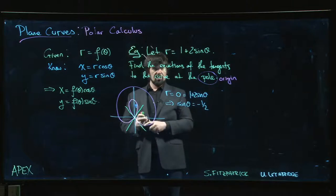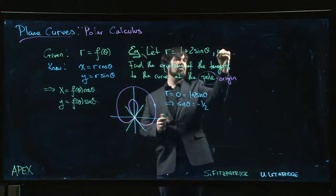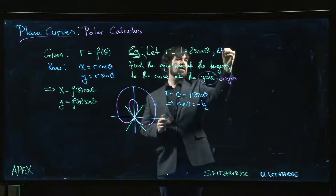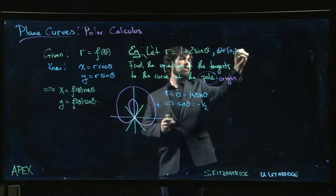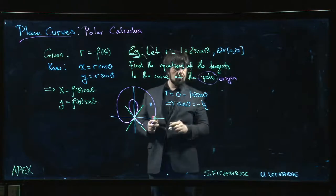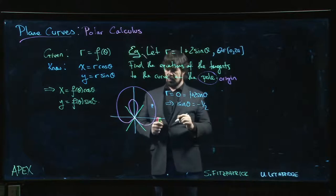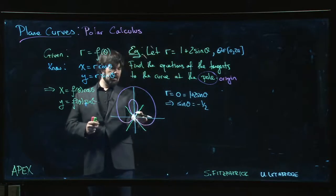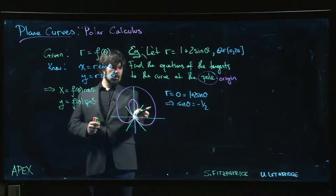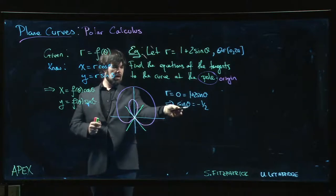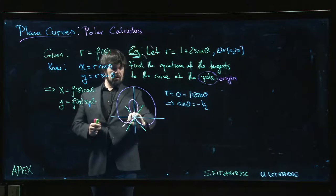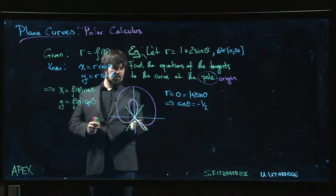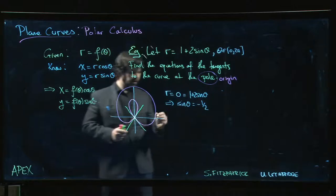There are going to be two angles. As usual here, theta runs between zero and two pi. There are going to be two angles between zero and two pi where that works out. So one half, the related angle there is pi over six. So the two places where sine theta is negative, one is over here at seven pi over six. The other one is over here at 11 pi over six.